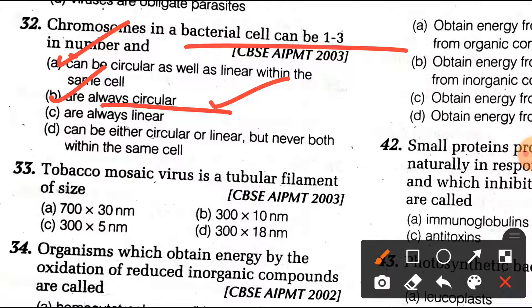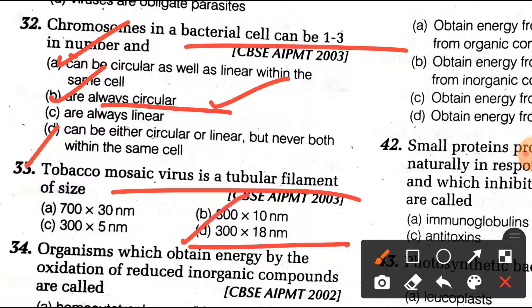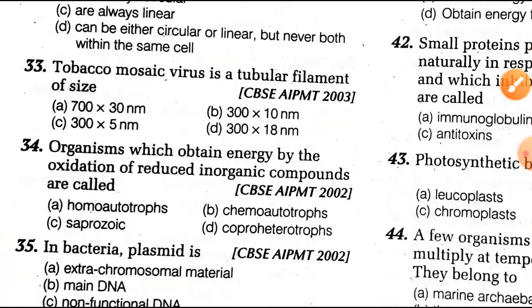Question number 33: Tobacco mosaic virus is a tubular filament of size option number 300 x 18 nanometers.